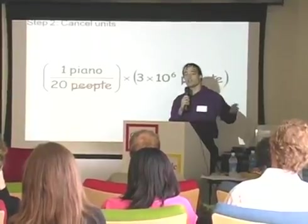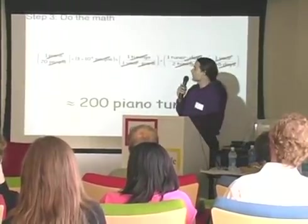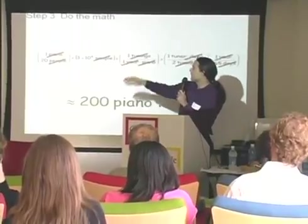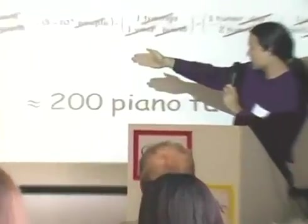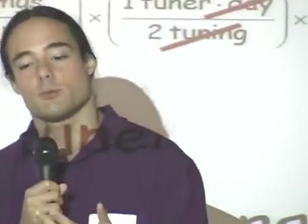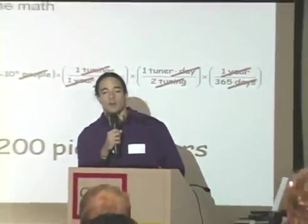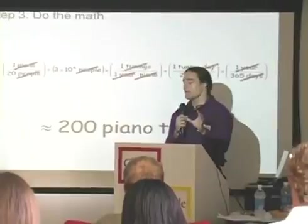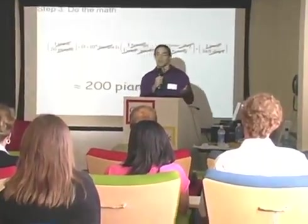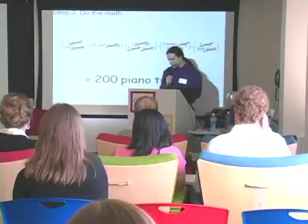You cancel units excessively: people cancel with people, pianos cancel with pianos, years cancel with years, days cancel with days. If you multiply all those numbers together, you calculate about 200 piano tuners in Chicago. Starting from absolutely nothing, you really can just build up and figure out a reasonable answer. Now, if you look in the Chicago Yellow Pages, there are about 40 listings for piano tuners — so we're off by less than a factor of 10. We're probably even closer than that, because not every tuner pays for a listing, and some listings may have several tuners. So we're actually pretty close.